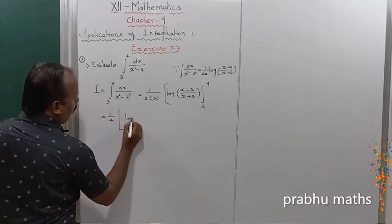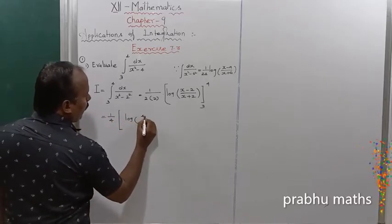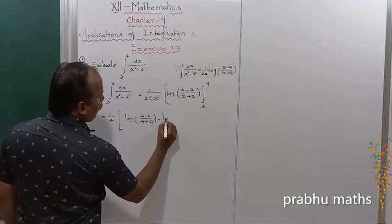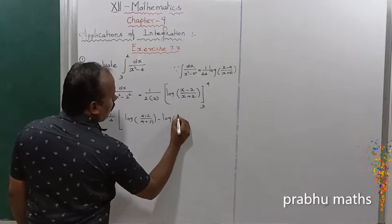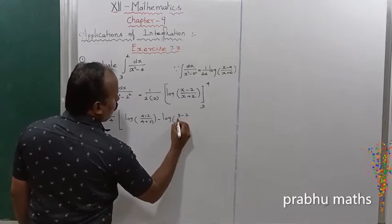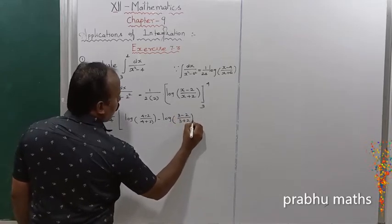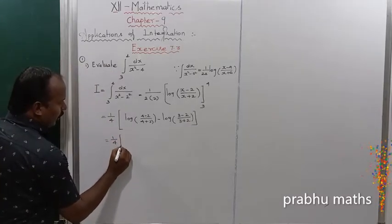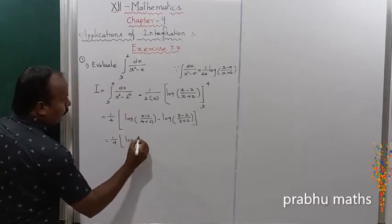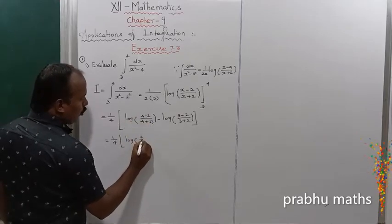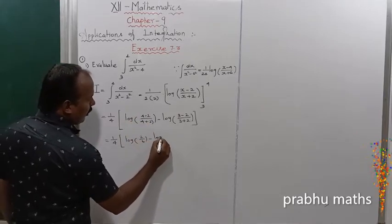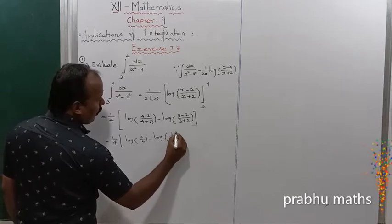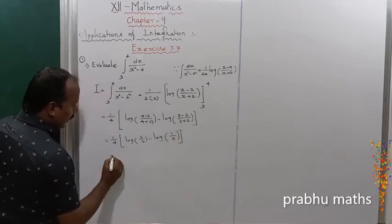That equals 1 by 4 into: applying the upper limit, log of 4 minus 2 by 4 plus 2, minus log of 3 minus 2 divided by 3 plus 2. So that is equal to 1 by 4 into log of 2 by 6 minus log of 1 by 5.